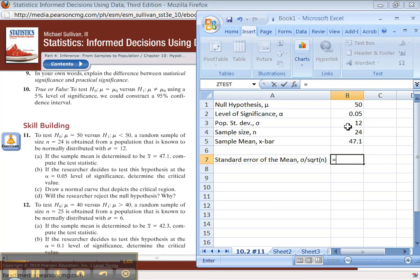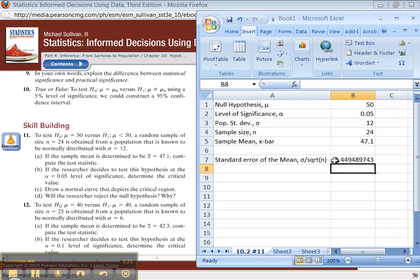So the first thing I'm going to have to do is find the standard error of the mean, which is sigma, which is this guy right here, 12, divided by the square root of the sample size, which was 24 in this case. And I'm using cell references B3 and B4, as is the case with most of these tutorials. If I create this correctly, then I can copy and paste it into another problem later and use it.